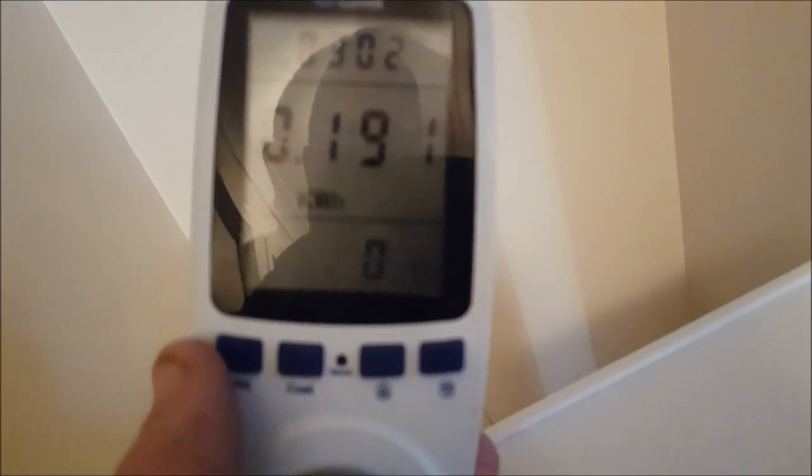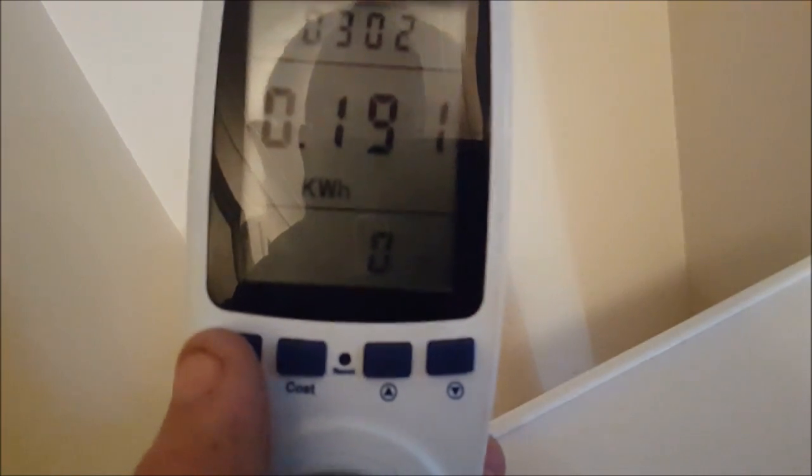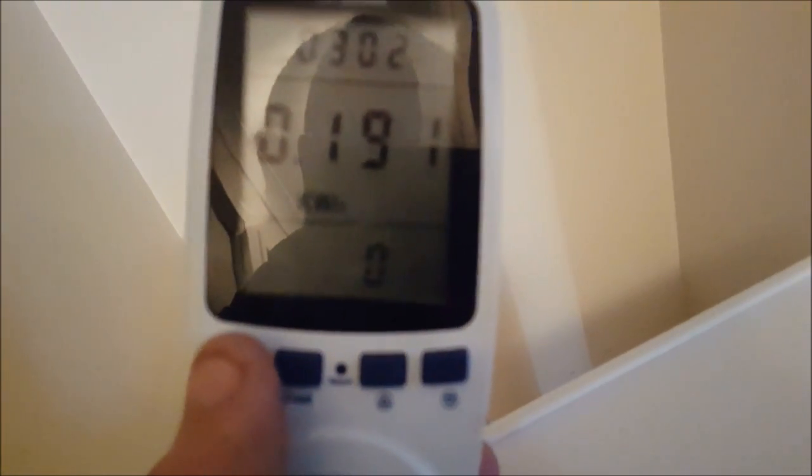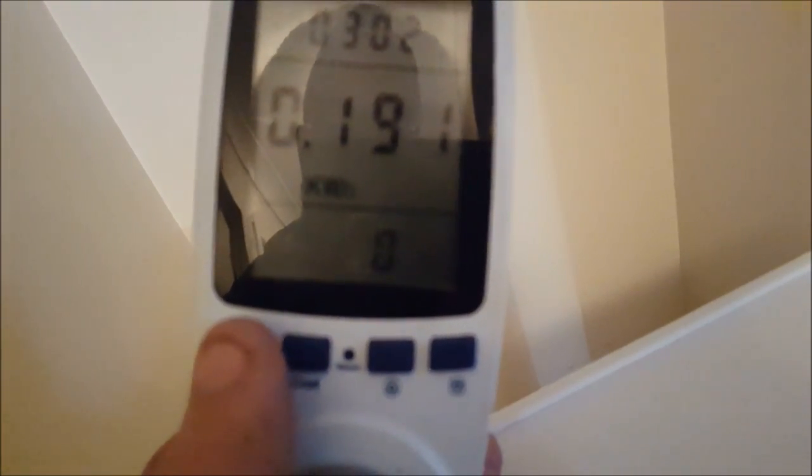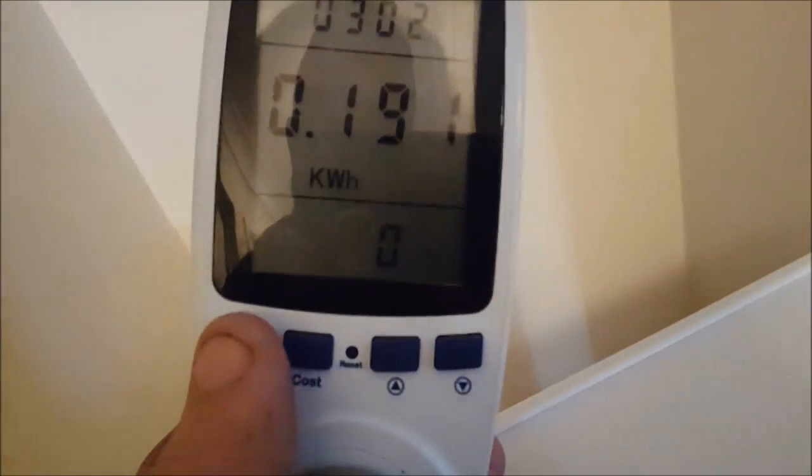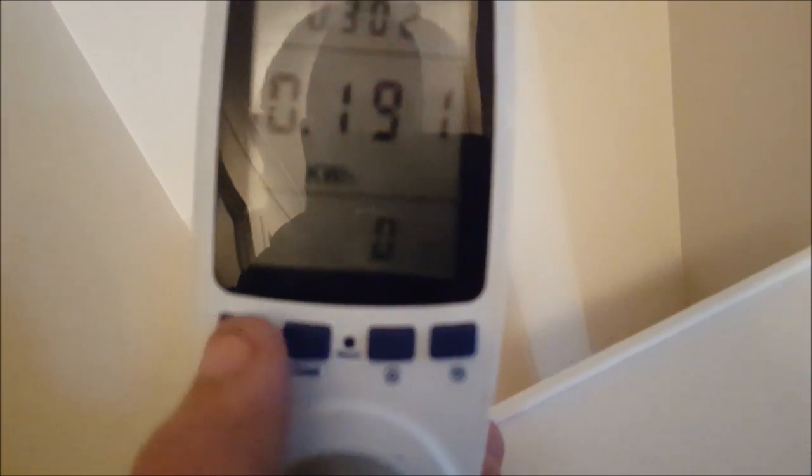All right, I've been going for 24 hours for this test—the chest freezer converted to a fridge. And there's the usage for 24 hours: 0.191 kilowatt hours. That's 191 watt hours.